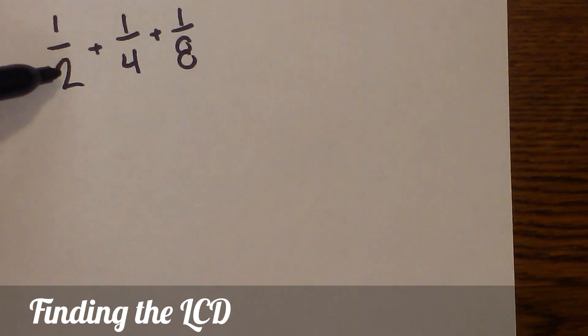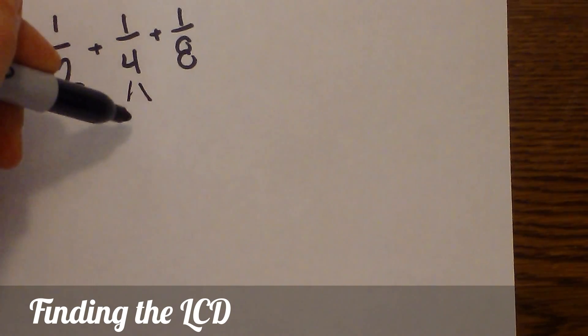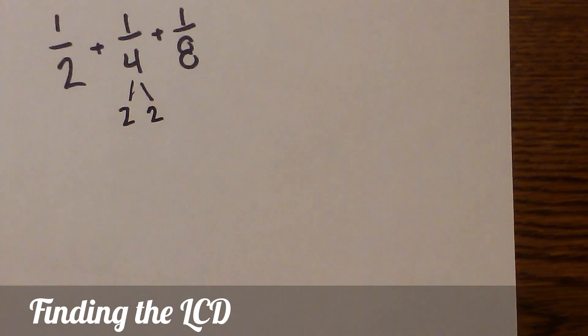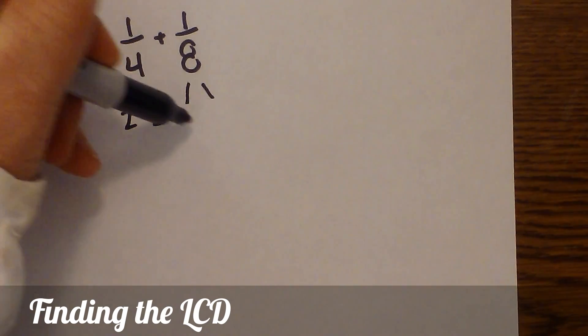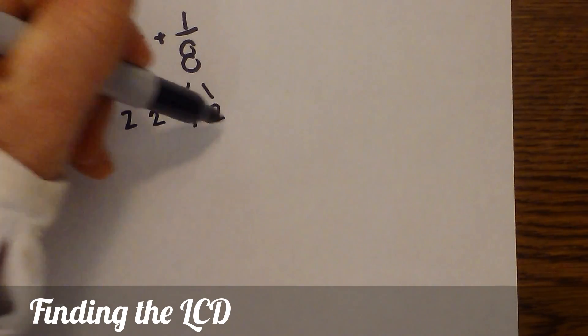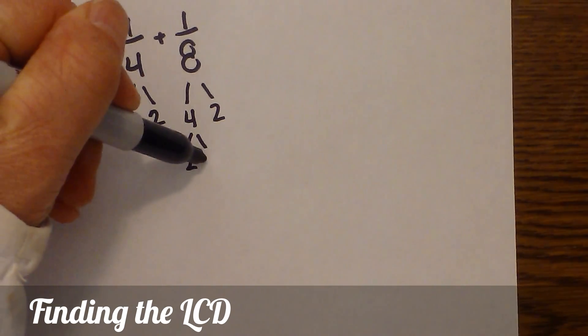Two is already prime, so we'll leave two as it is. Then four becomes two times two, and both of these are prime. Then eight becomes four times two, and then two times two. Now we're down to prime numbers.